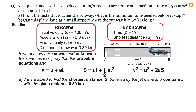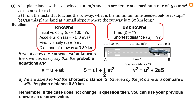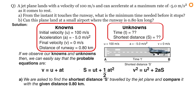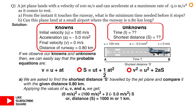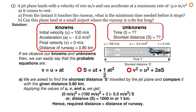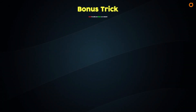For part B, we need the shortest distance traveled and to compare it with 0.80 kilometers. We have initial velocity, final velocity, acceleration, and also time from part A — remember, if the case doesn't change between questions, you can use your previous answer as a known value. Choosing v² = u² + 2as and applying the values, we get distance s = 1000 meters or 1 kilometer. Comparing the required distance of 1 km with the runway length of 0.80 km, the required distance is greater, meaning this landing will be unsuccessful — the plane cannot land at this small airport.